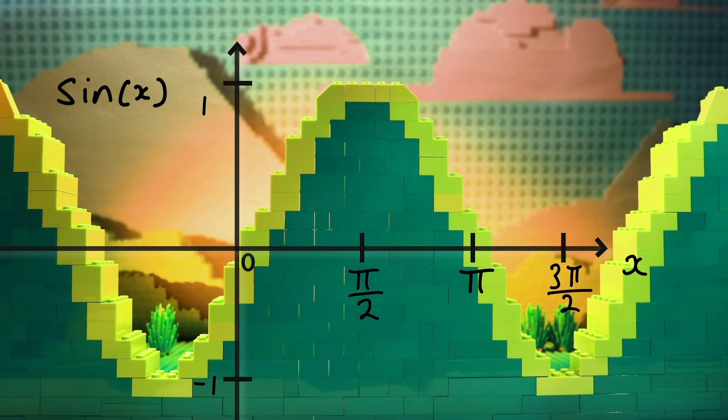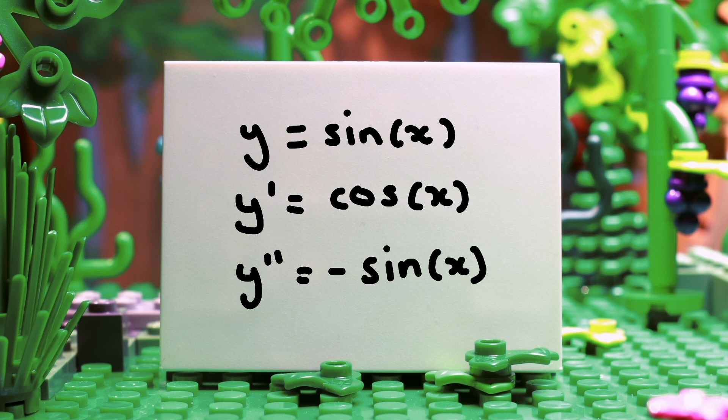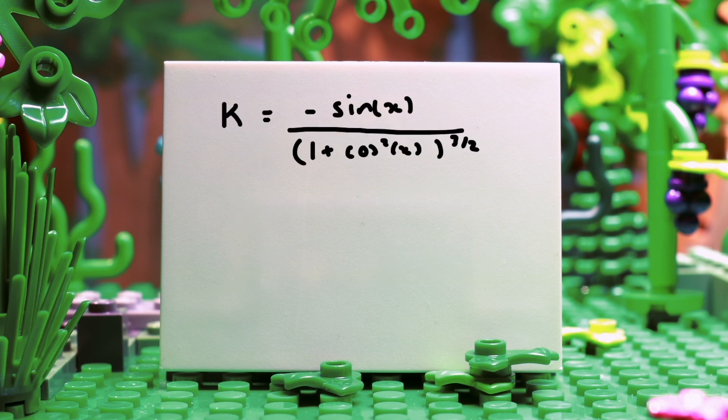Let's consider an example of the function y equals sine of x. The first derivative of y, y prime, is cos of x. The second derivative is negative sine of x. We can put these into the expression for kappa.